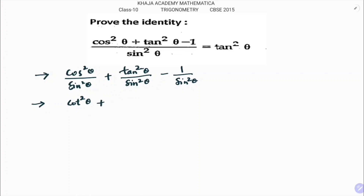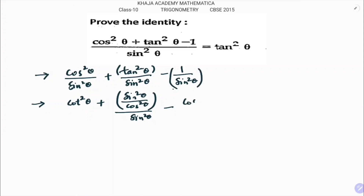For tan²θ / sin²θ, write tan²θ as sin²θ / cos²θ. So (sin²θ / cos²θ) divided by sin²θ — the sin² cancels — leaving 1 / cos²θ. And 1 / sin²θ is cosec²θ.